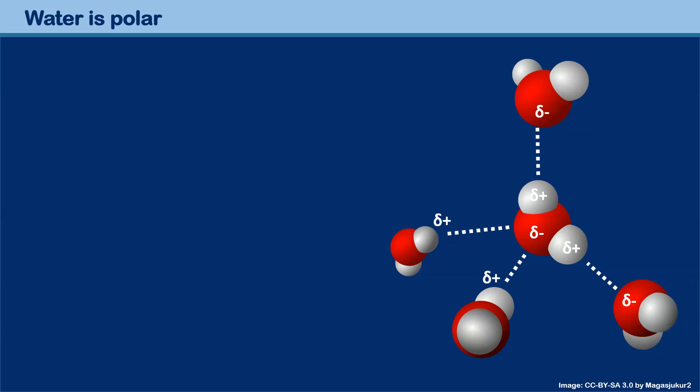What you see over here is a water molecule and you can see the red colored oxygen atom and the two hydrogen atoms. You can also see that the hydrogen atoms are positively charged and the oxygen is negatively charged.